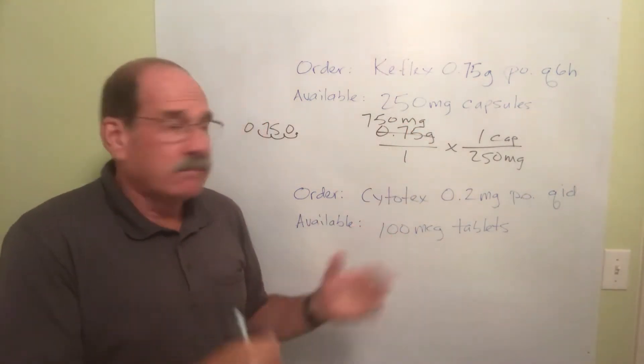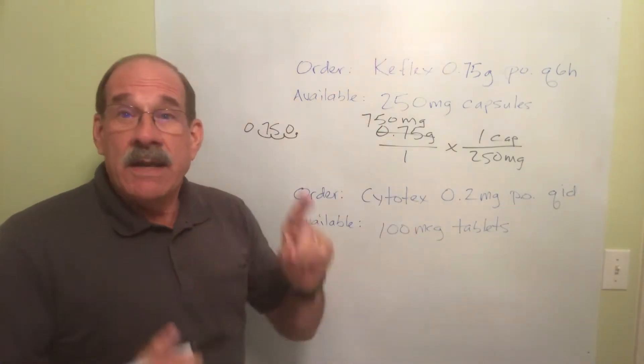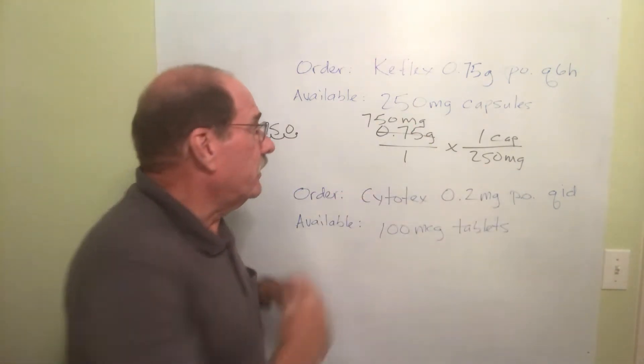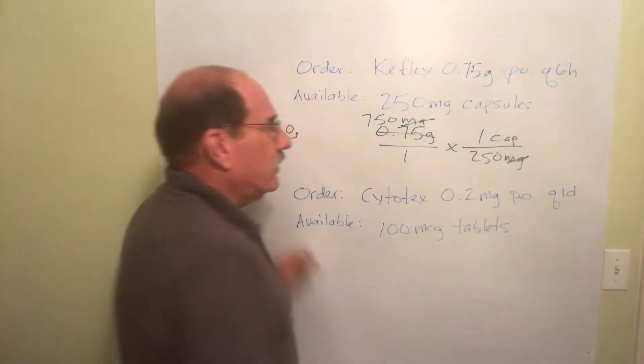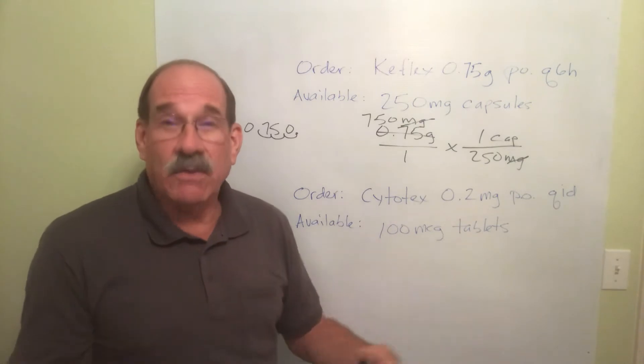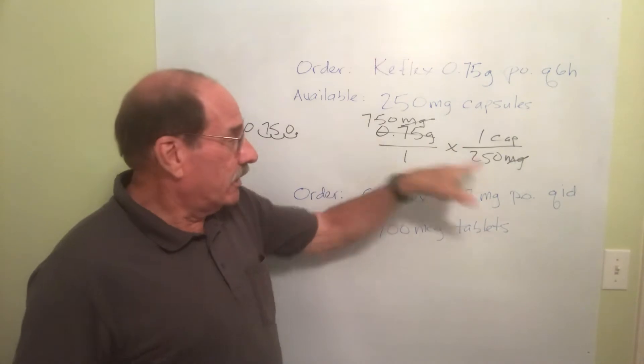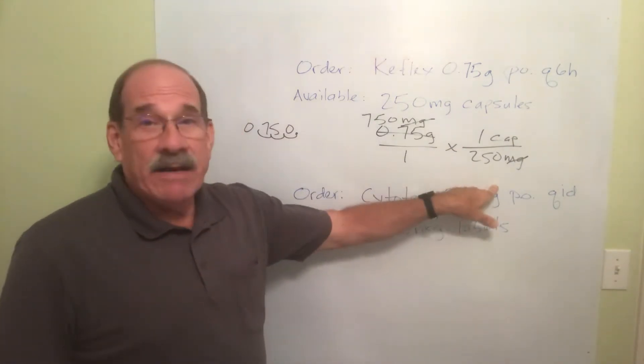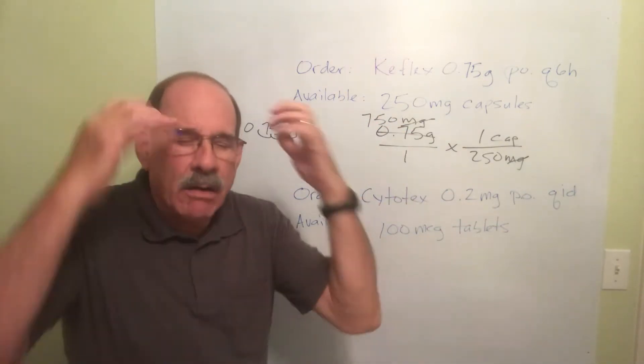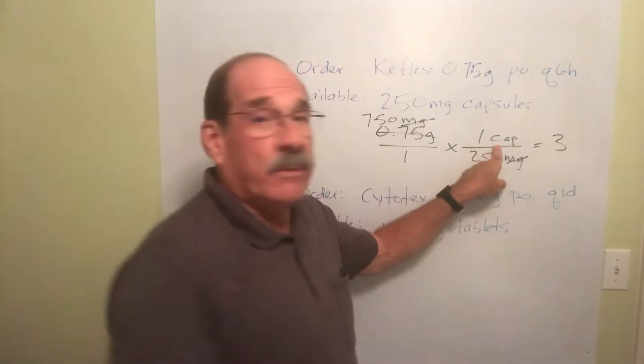Milligrams. That's the same thing: 0.75 grams is 750 milligrams. Now I've got milligrams up here, I've got milligrams down here, so this milligrams on the top cancels that milligrams on the bottom. And what's my math? You've been doing enough of these already. I have two non-one numbers: one's on top, one's on the bottom. I take this, I divide it by this. You take 750 divided by 250, and the answer is three. The answer is three what? Three capsules.